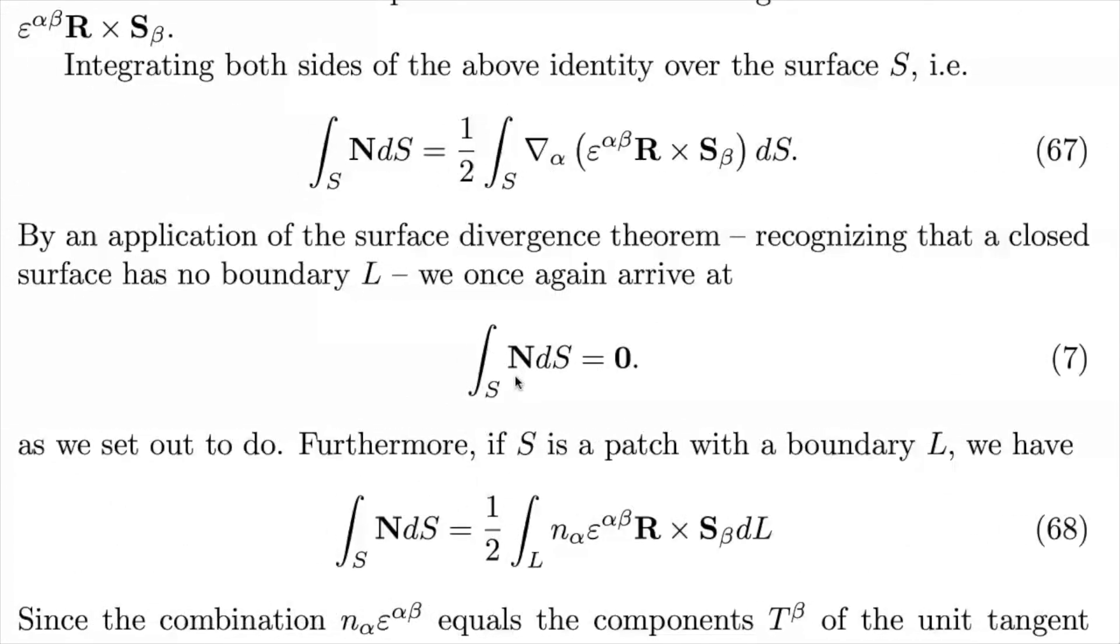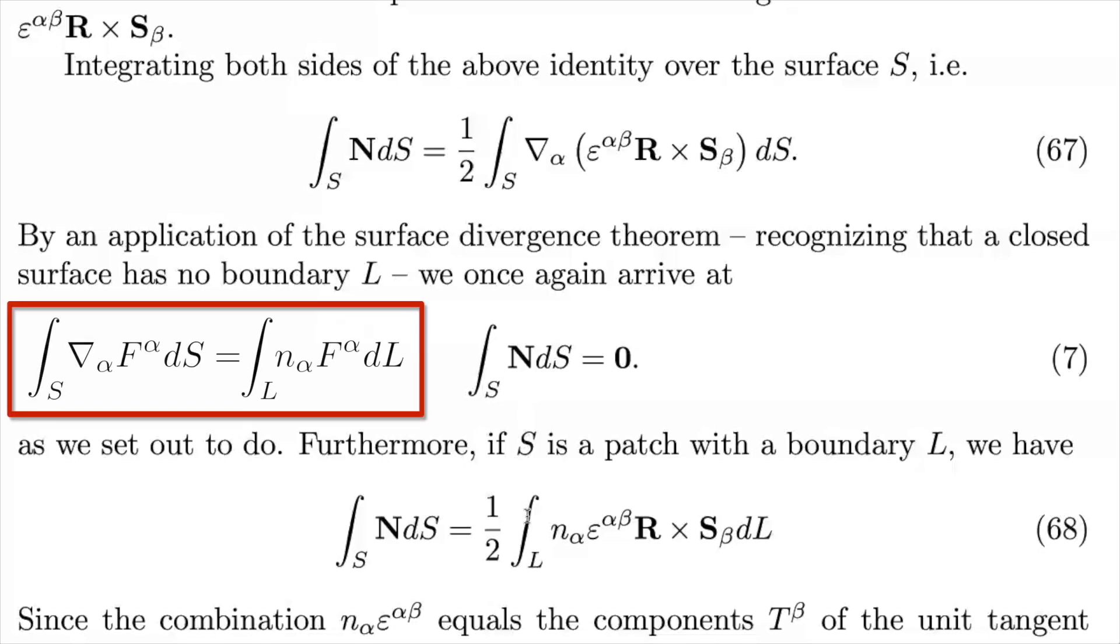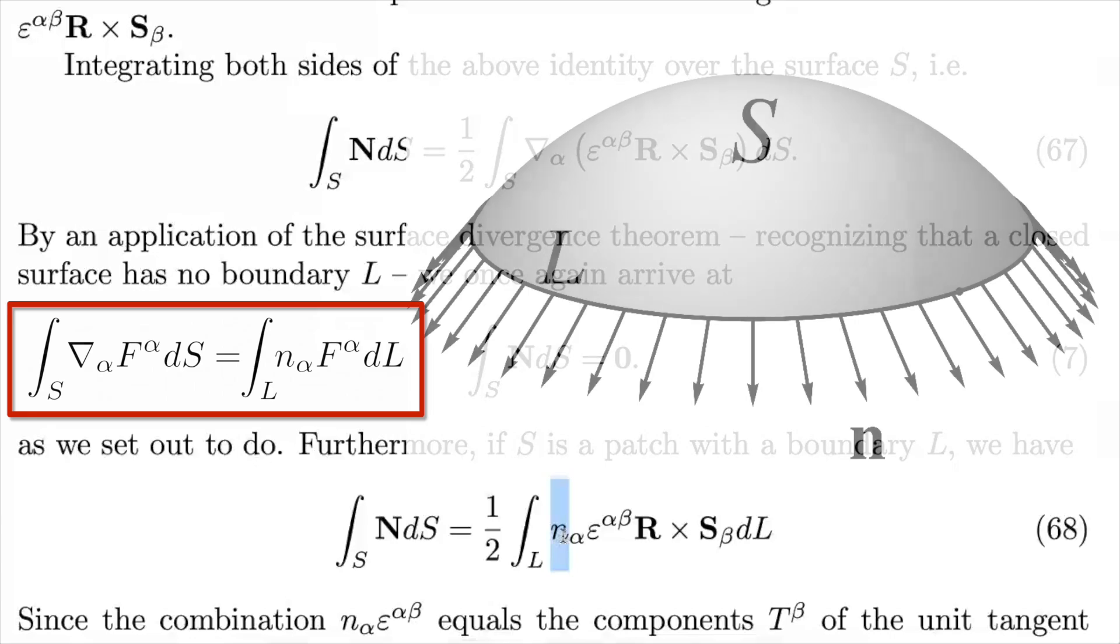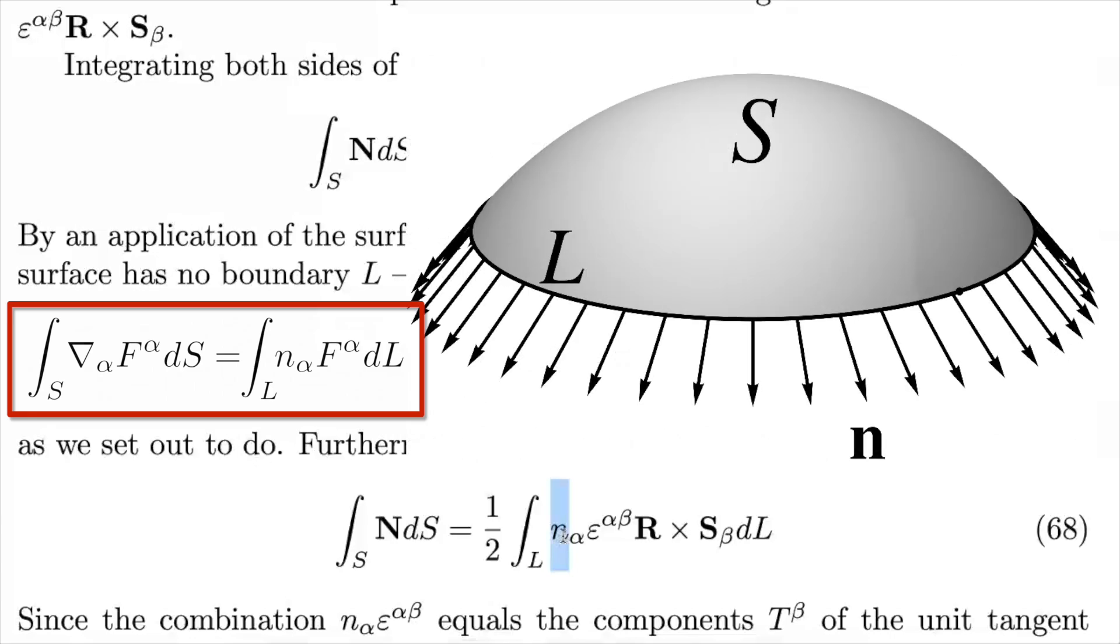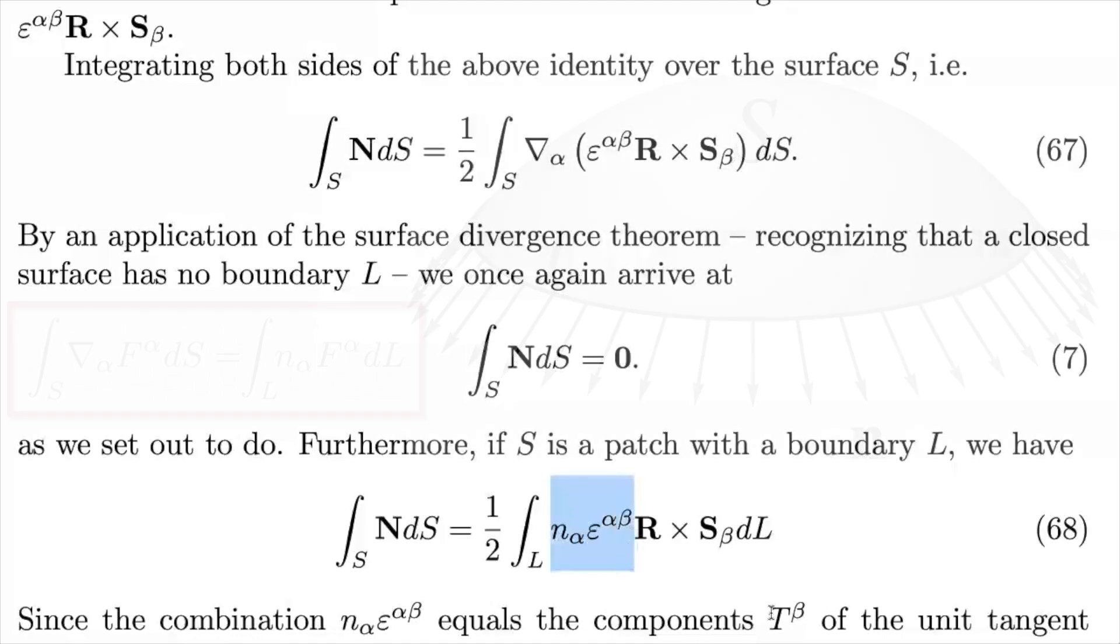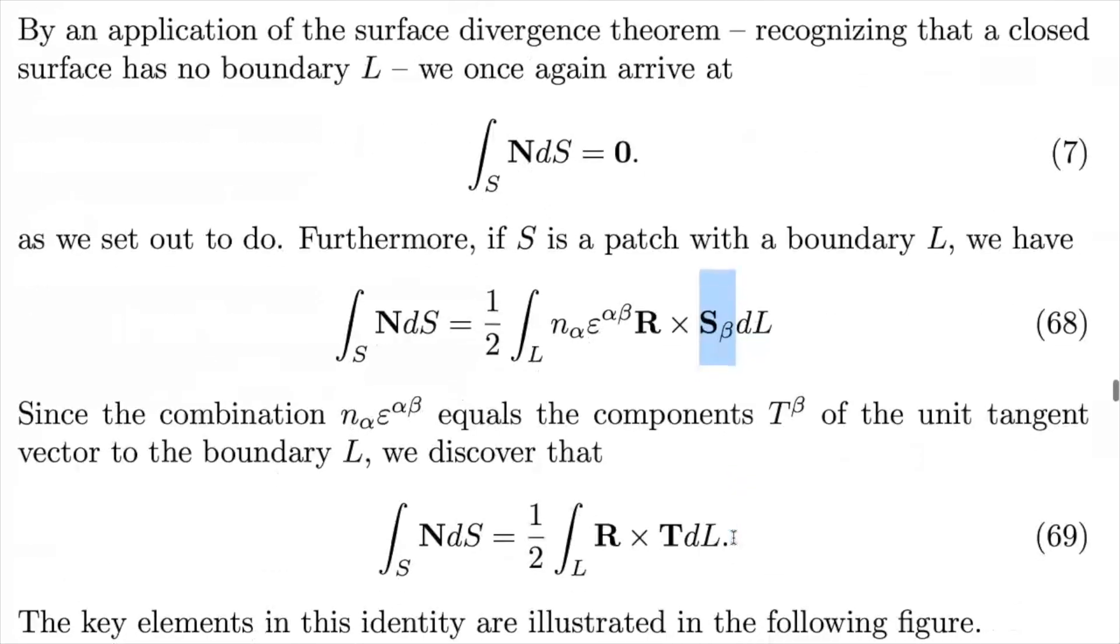Now, when the surface does have a boundary, then by the divergence theorem, we end up with this contour integral, which now features this object, n, that represents the components of the tangent normal. And in combination with the Levi-Civita symbol, we end up with the components of the unit tangent. And when the components of the unit tangent are combined with the surface basis, we end up with the unit tangent itself.